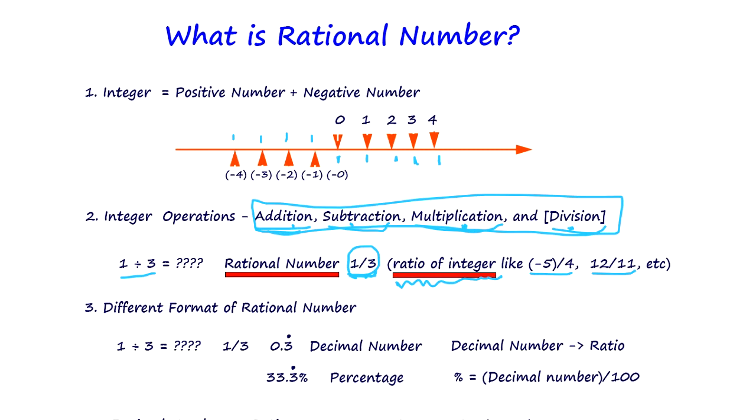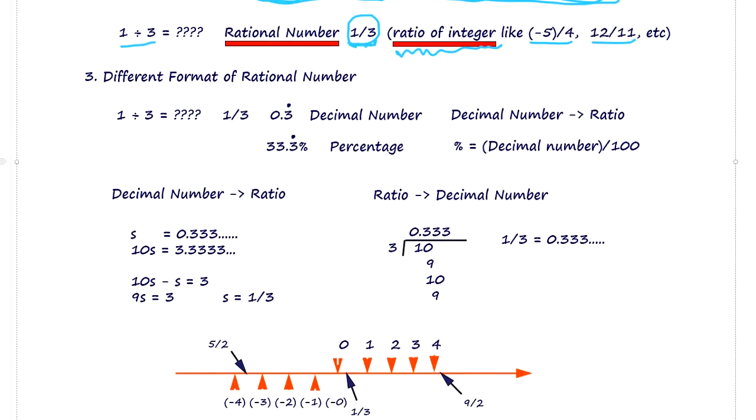Now, rational numbers have more than just one format. One divided by three - sure, one over three is an easy way to write it. But we have the so-called decimal number. Decimal numbers continue the division. You do the division all the way until you get the last number. If you don't have a last number, you put dots indicating it's repeated.